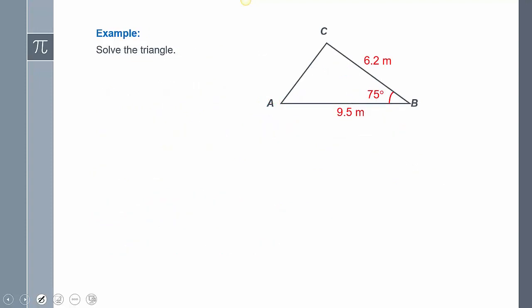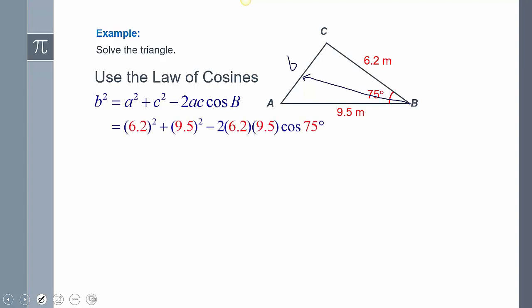Okay, so this one. This is side, angle, side. Side, angle, side means law of cosines again. Again, the hint, always finding that side first, so we can only find B. So using the law of cosines, I'm going to use the equation that has B by itself. Ta-da! That's what I need to find. So you just plug it in.